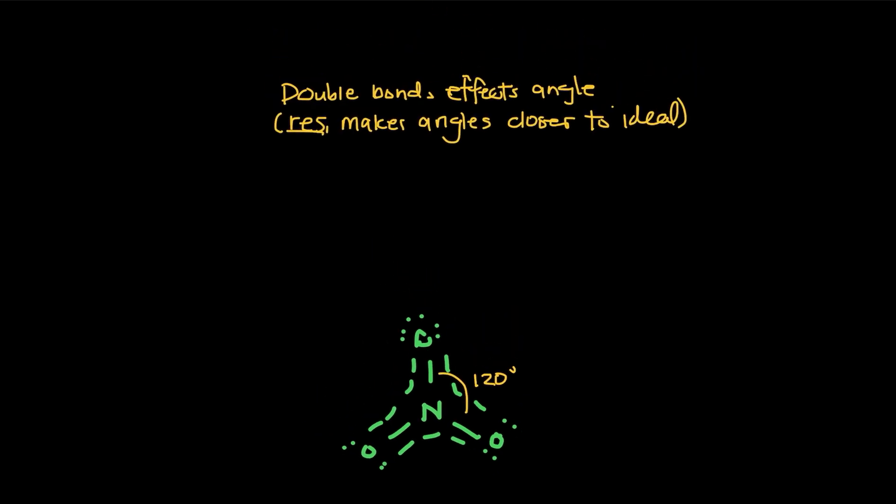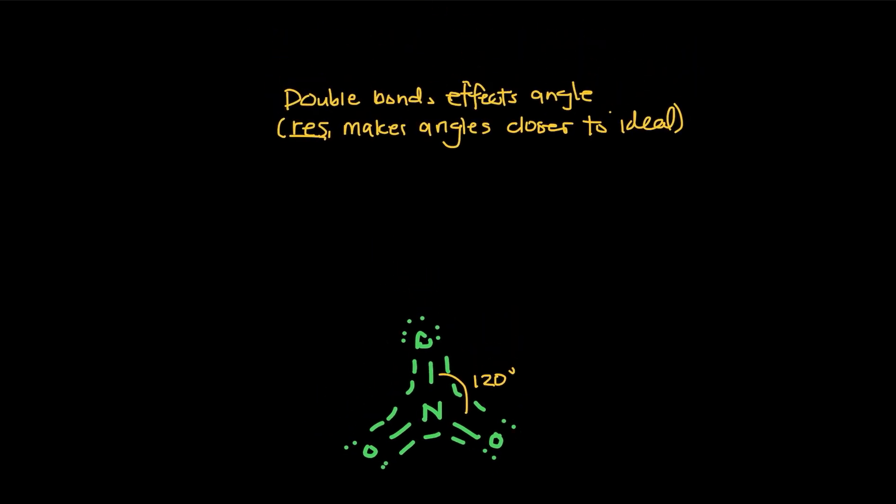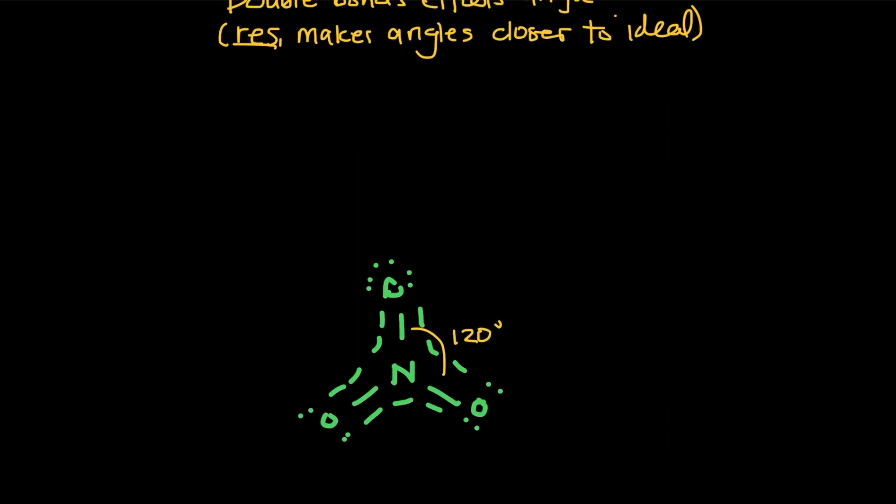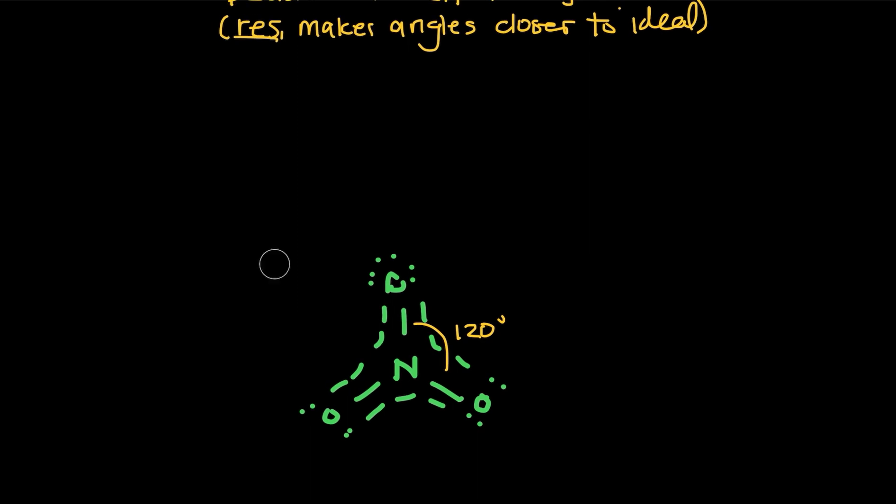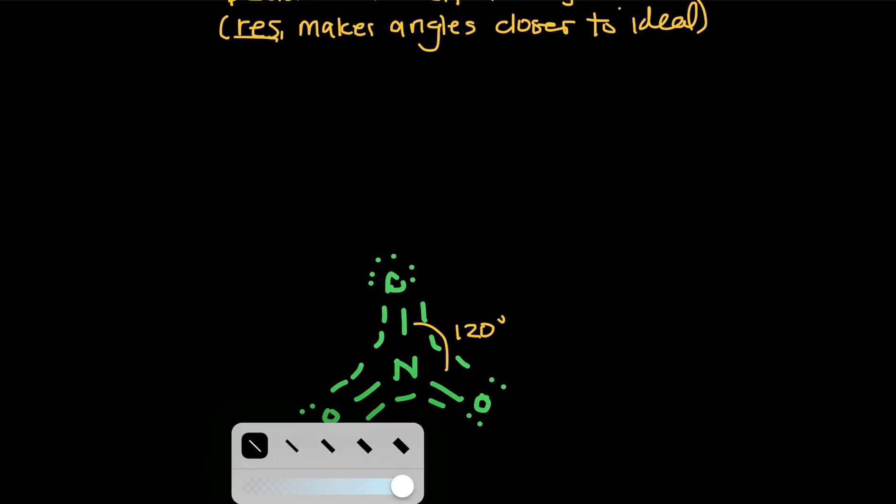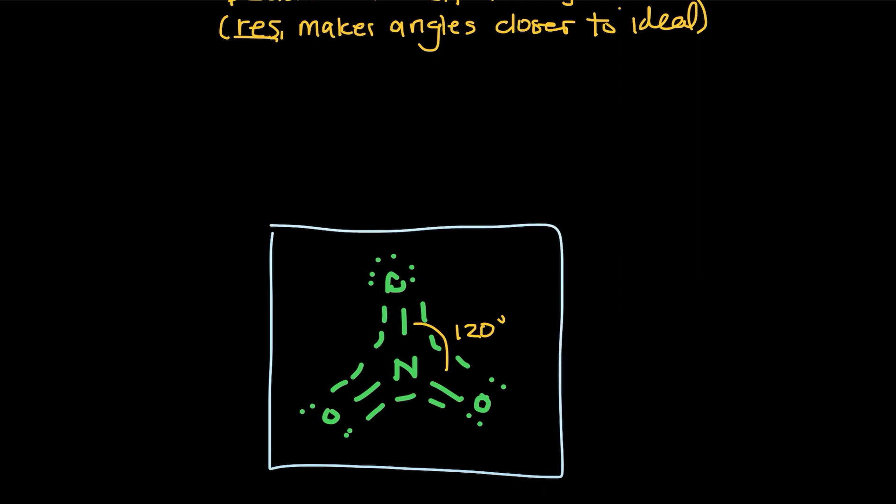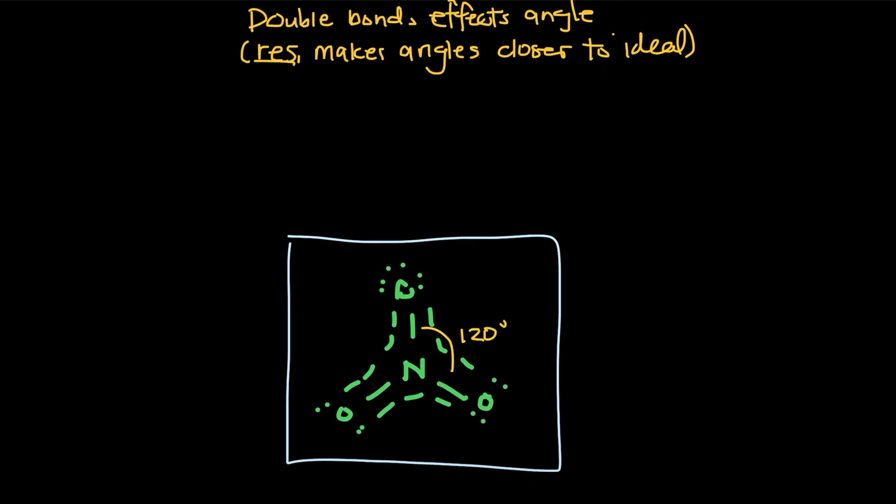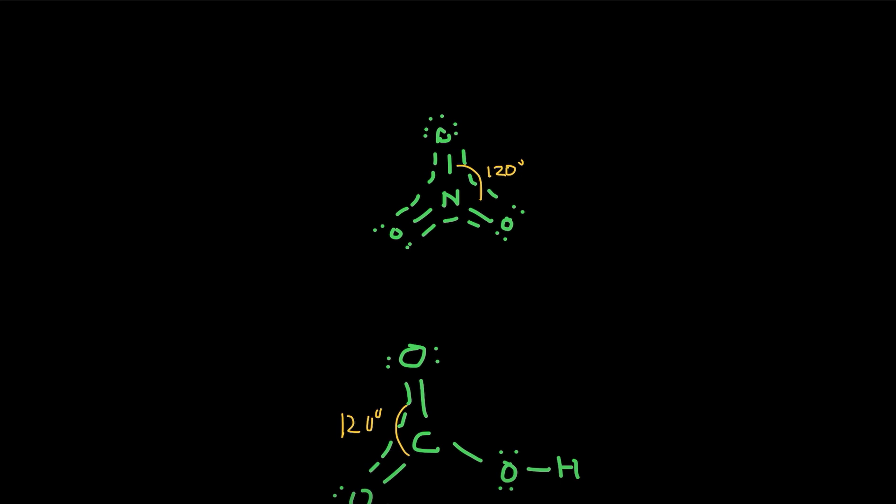It would just be an ideal 120. So resonance structures in some cases will make angles closer to ideal depending on which corners of resonance are happening at. But if you've got a trigonal planar super common here, just remember that because the electron is equally delocalized, the bond angles are ideal because all three of these bonds are exerting similar equal force on the central atom.